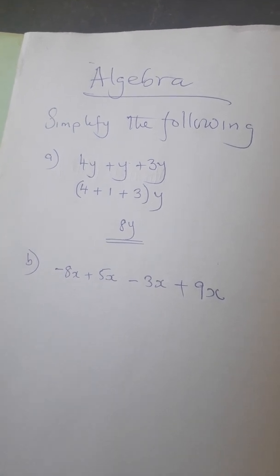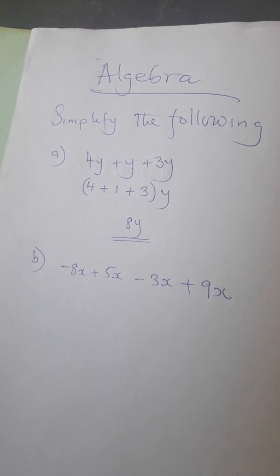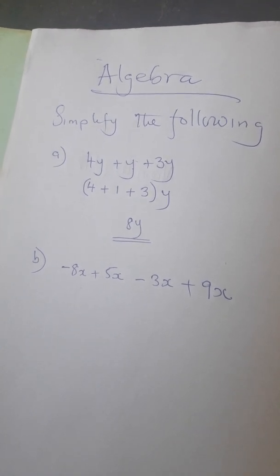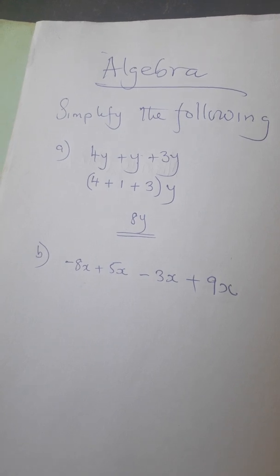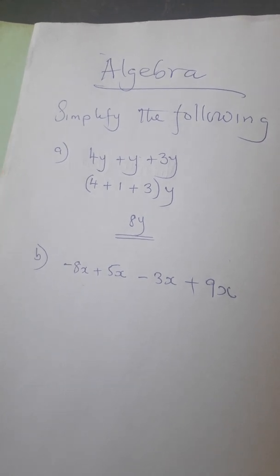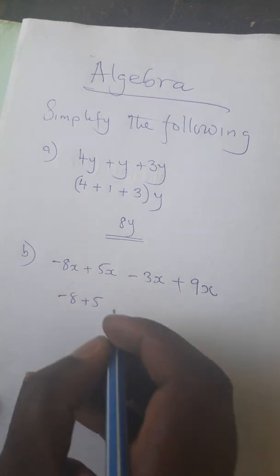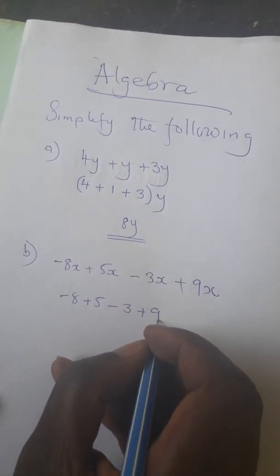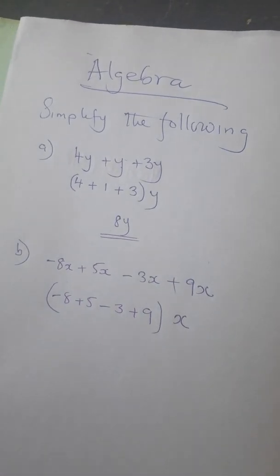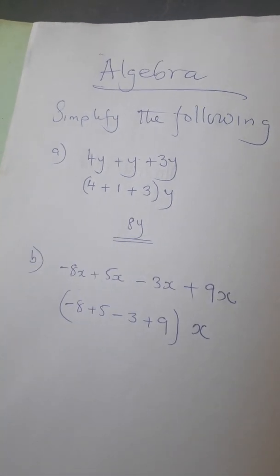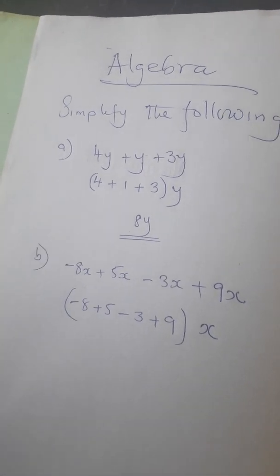So for the first term the coefficient of x is negative 8, for the second one the coefficient of x is 5, the next one is negative 3, and so on. So we're going to work with (negative 8 + 5 − 3 + 9) and then put our x alongside that.